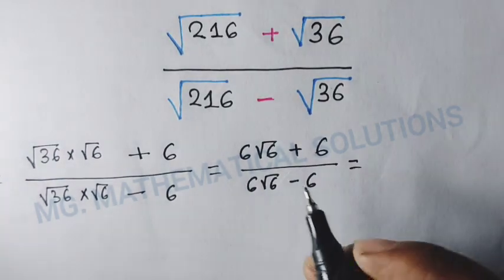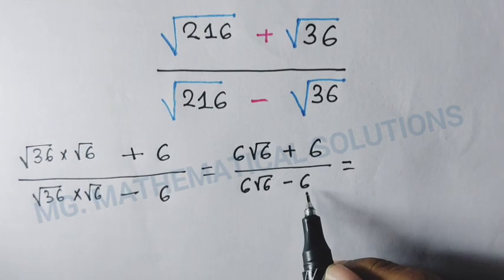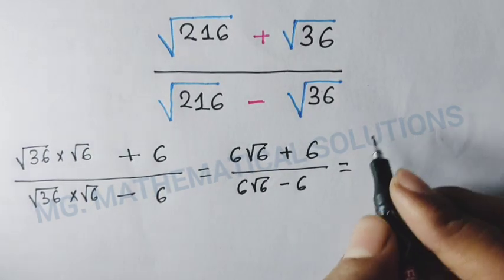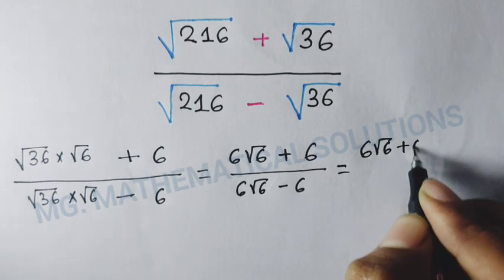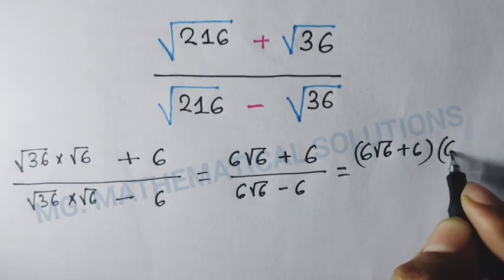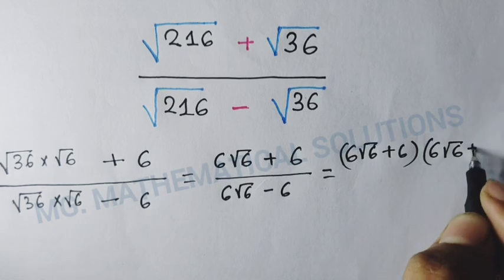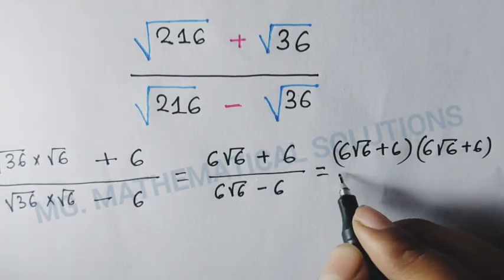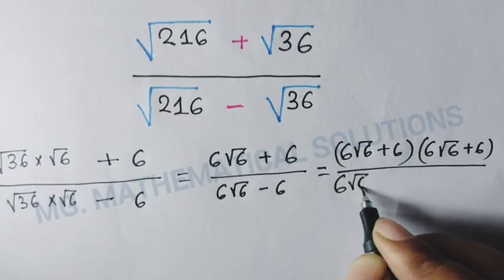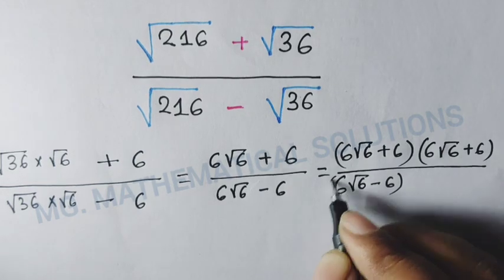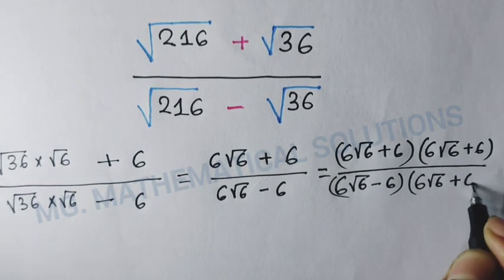Now we multiply the numerator and denominator by (6√6 + 6). So we get (6√6 + 6) × (6√6 + 6) divided by (6√6 - 6) × (6√6 + 6).